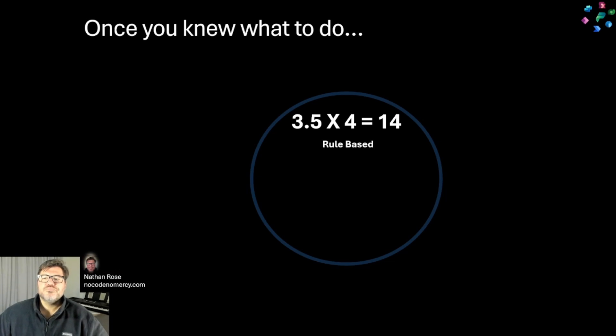And as an automation, we are rule-based - multiplication always works the same way. Deterministic - we're always going to get a number when we're multiplying. Static -